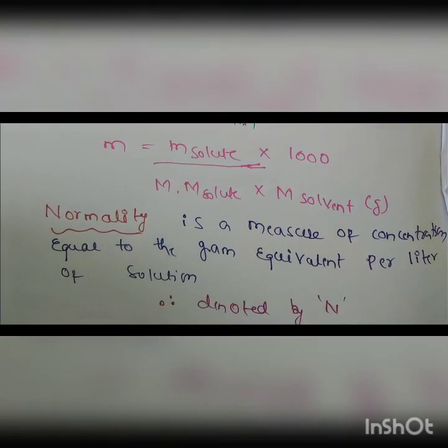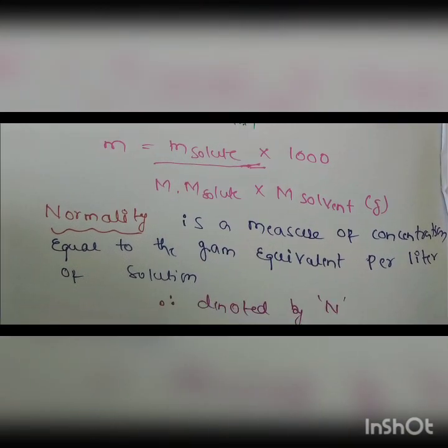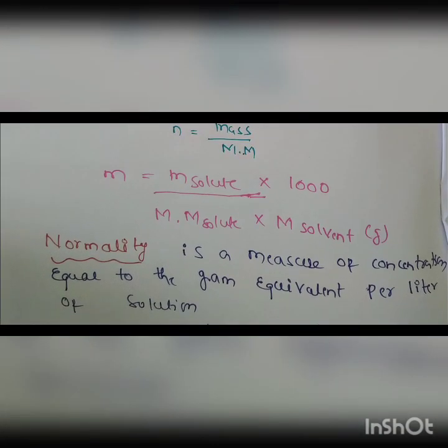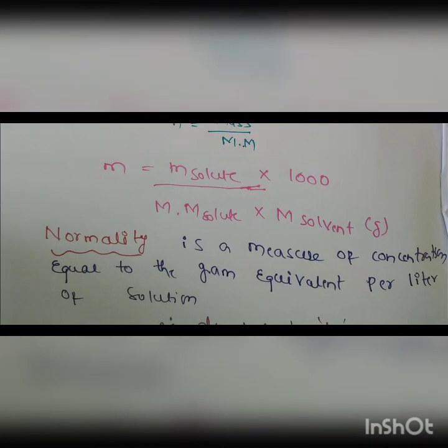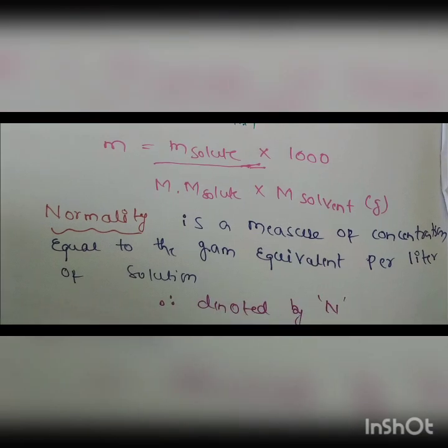Normality is a measure of concentration equal to the gram equivalents per liter of solution. Normality is denoted by small n. These are the basic concepts in chemistry. You can take a screenshot of this. With this, I will conclude this video. Thank you.